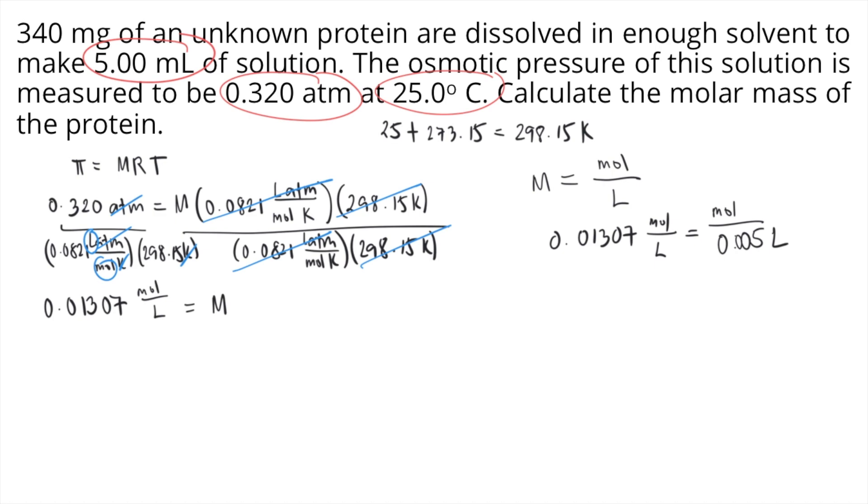To solve for the moles, how do we do this? We multiply both sides of the equation by 0.005 litre. So you do that on the right side, you also do that on the left side. On the right side, 0.005 will cancel out, so what's left is your moles.